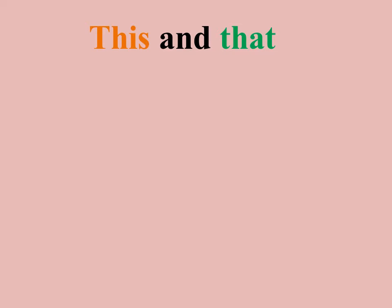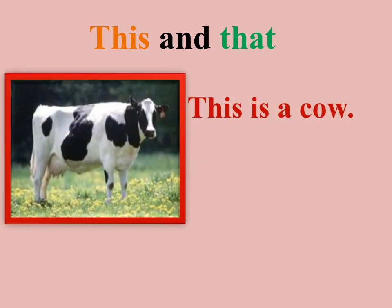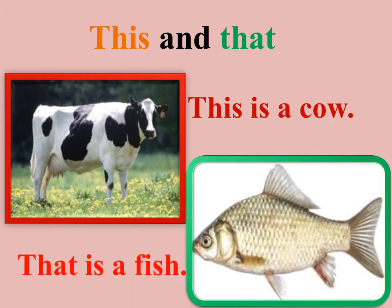Let us see a few examples of the use of 'this' and 'that'. This is a cow. That is a fish.